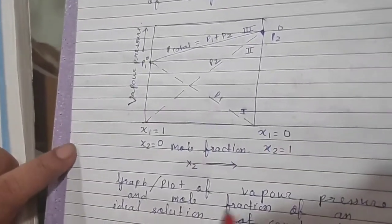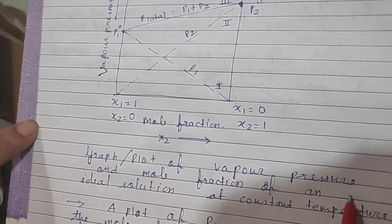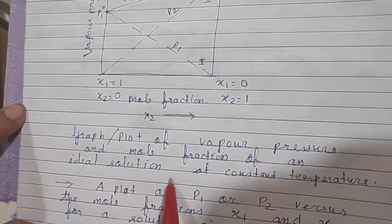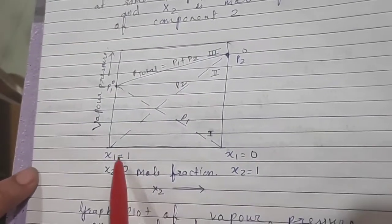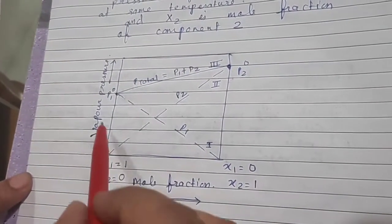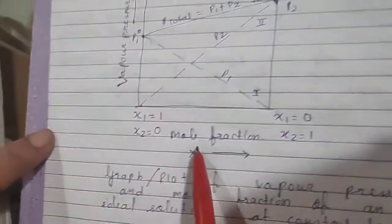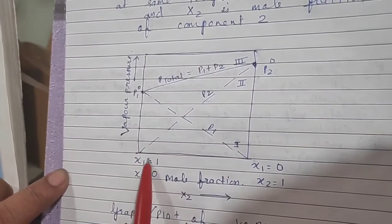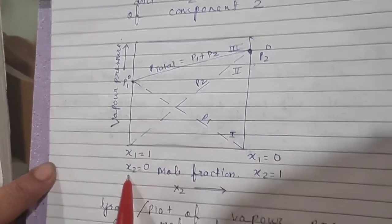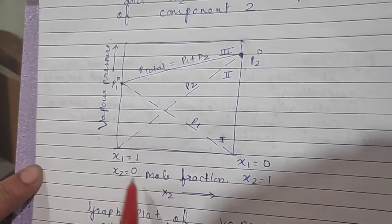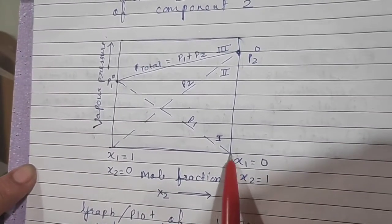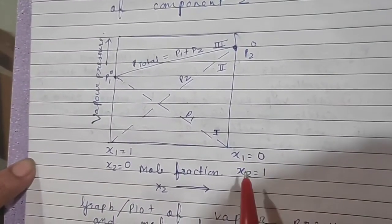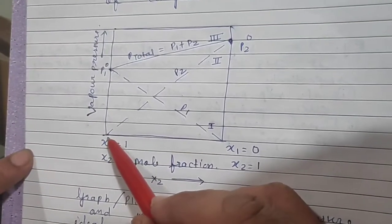The graph is a plot of vapor pressure versus mole fraction of an ideal solution at constant temperature. On the x-axis is mole fraction and on the y-axis is vapor pressure. Mole fraction of component 1 starts at 1 and decreases to zero, while mole fraction of component 2 starts at 0 and increases to 1.